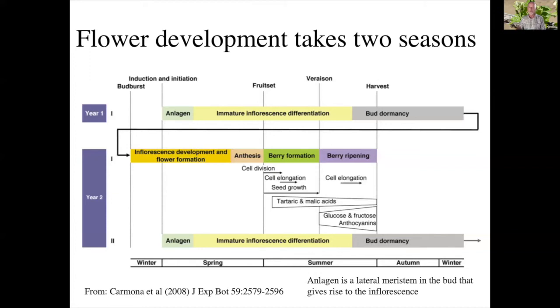An anilogen is a lateral meristem in the bud that gives rise to the inflorescence.